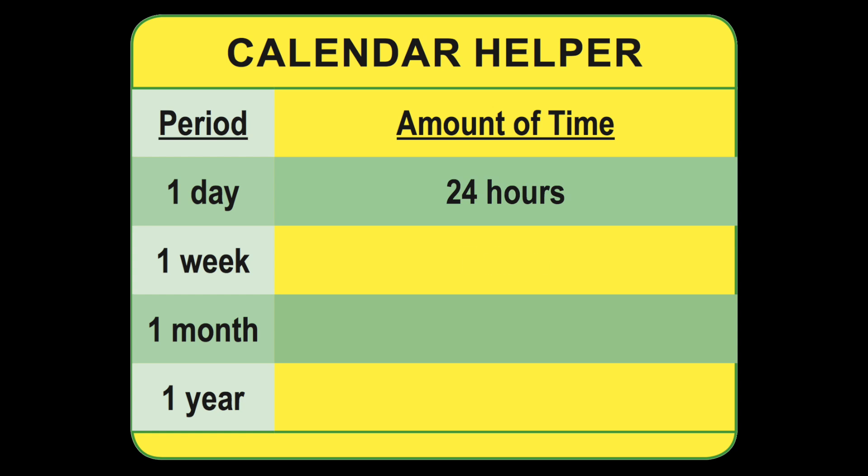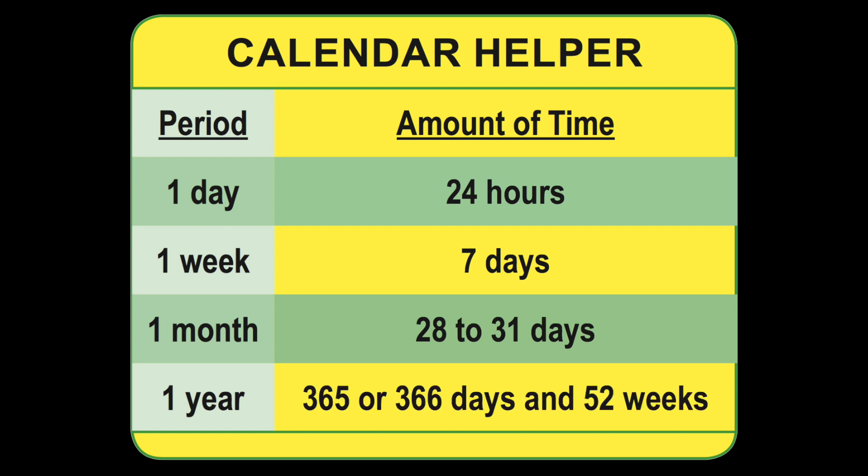To help you remember the different numbers, use the calendar helper: one day equals 24 hours, one week equals seven days, one month is 28 to 31 days, and one year is 365 days or 366 days in a leap year.